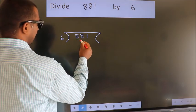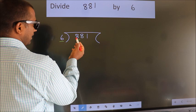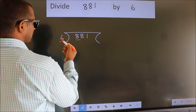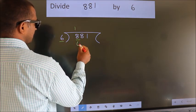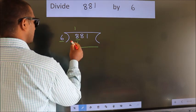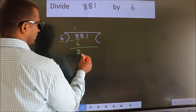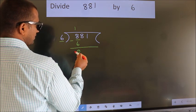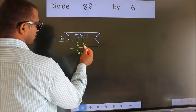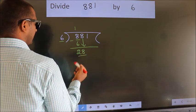Here we have 8, here 6. A number close to 8 in the 6 table is 6 × 1 = 6. Now we should subtract. We get 2. After this, bring down the beside number. So 8 down. So 28.